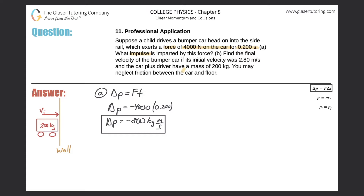Why don't we look at letter B? Find the final velocity of the bumper car if its initial velocity was 2.8 meters per second, and the car plus the driver have a mass of 200 kilograms. You may neglect friction between car and floor. We know that the change in momentum was equal to negative 800. That should also make sense because the momentum of the car as it's coming in should be decreasing — it's hitting a wall. The total momentum of the car better be going down; it can't possibly be increasing. So it makes logical sense based on the direction of the force we talked about before.